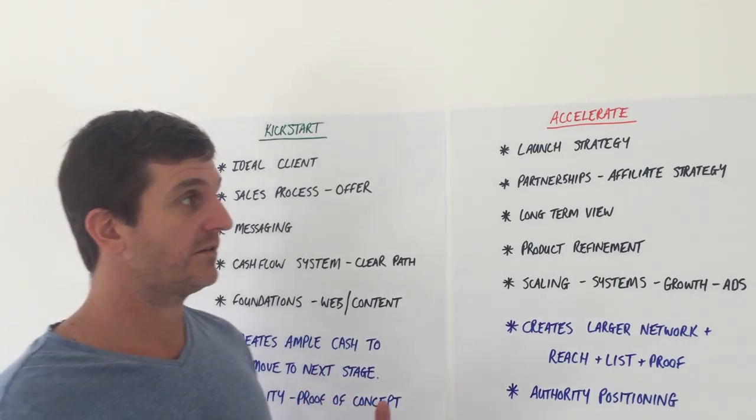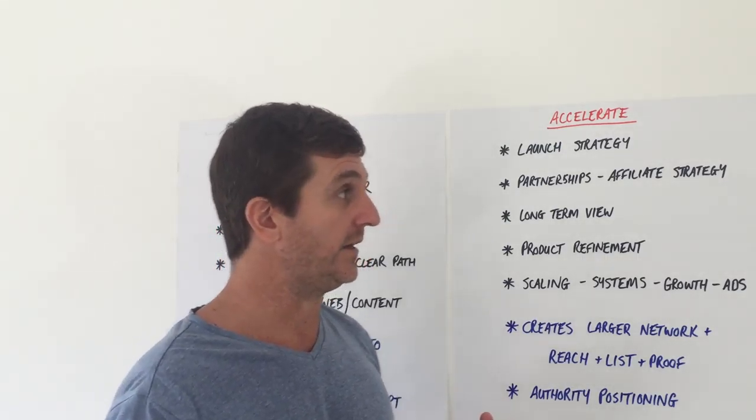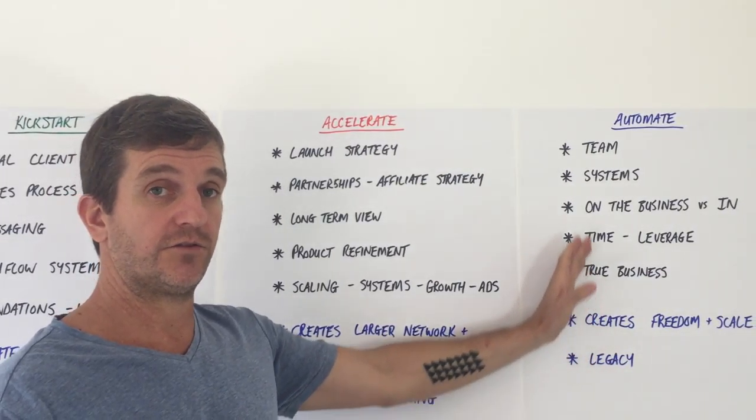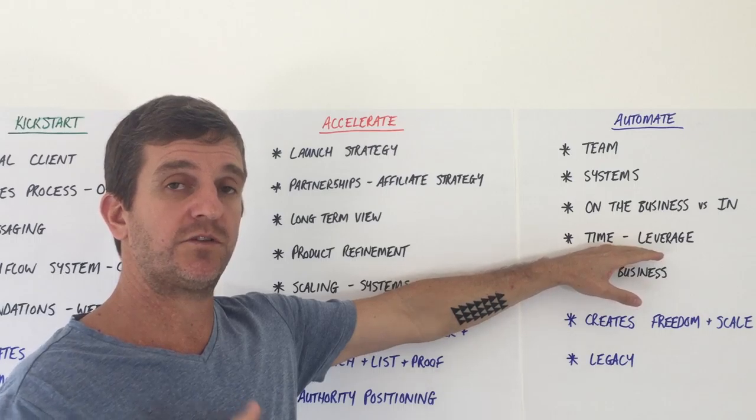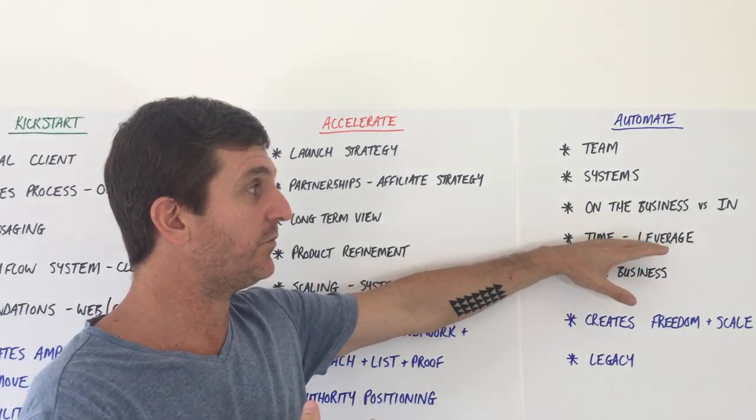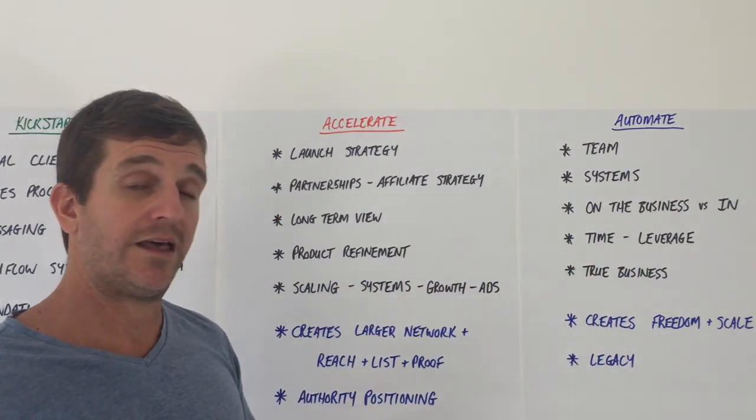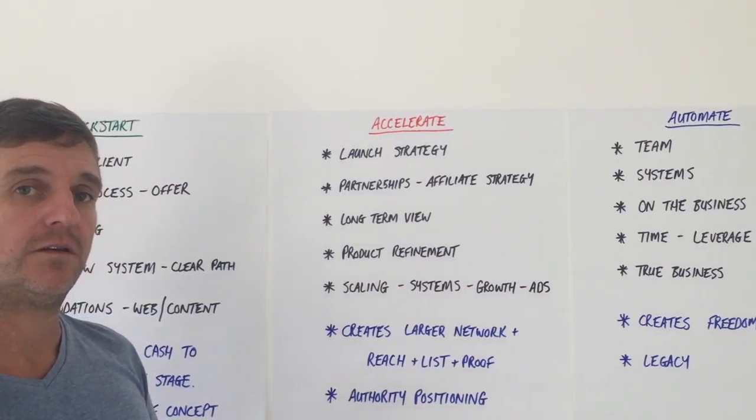A Prince normally has proven products on the market already and sometimes they come to me just for the Automate phase. So it's really about them getting their time back and implementing systems and strategies that give them time, that allow them to implement team, that let them work on their business instead of in their business.